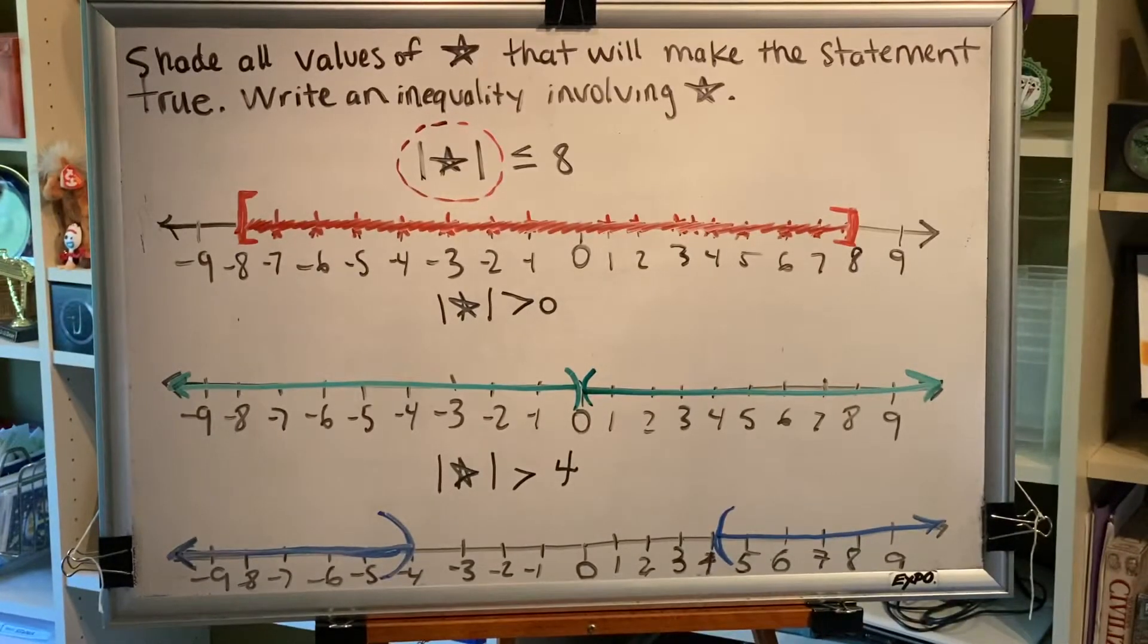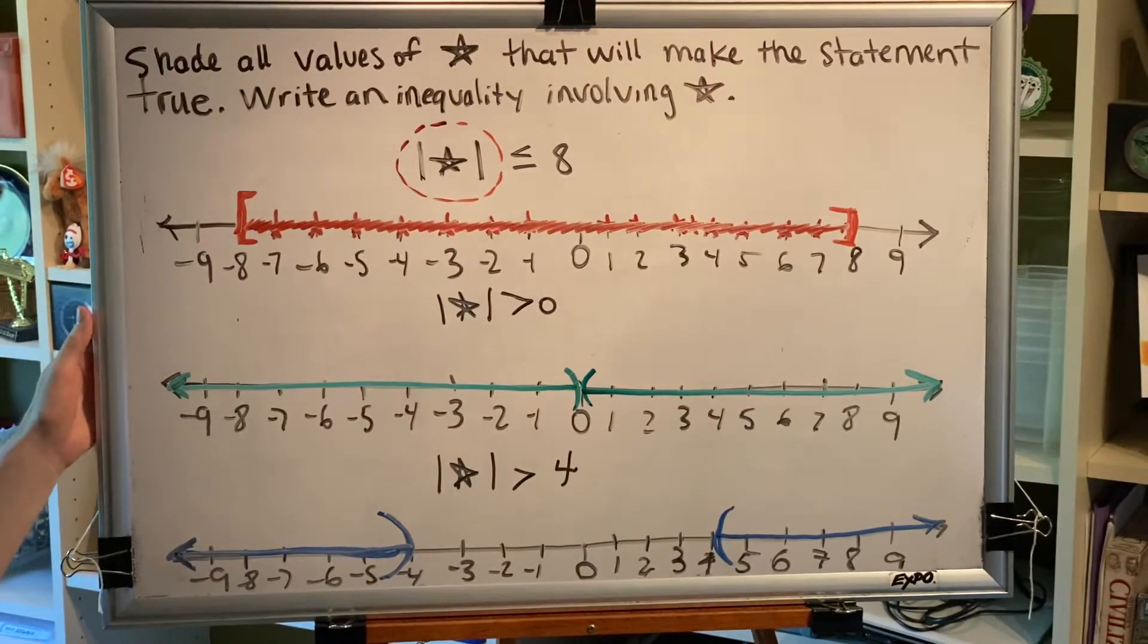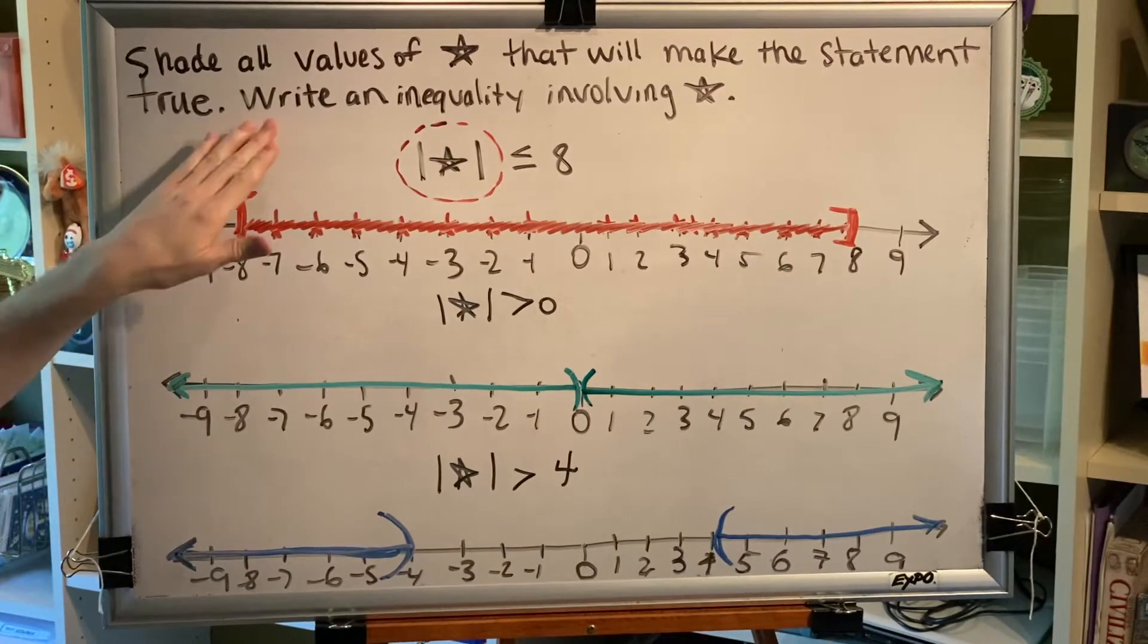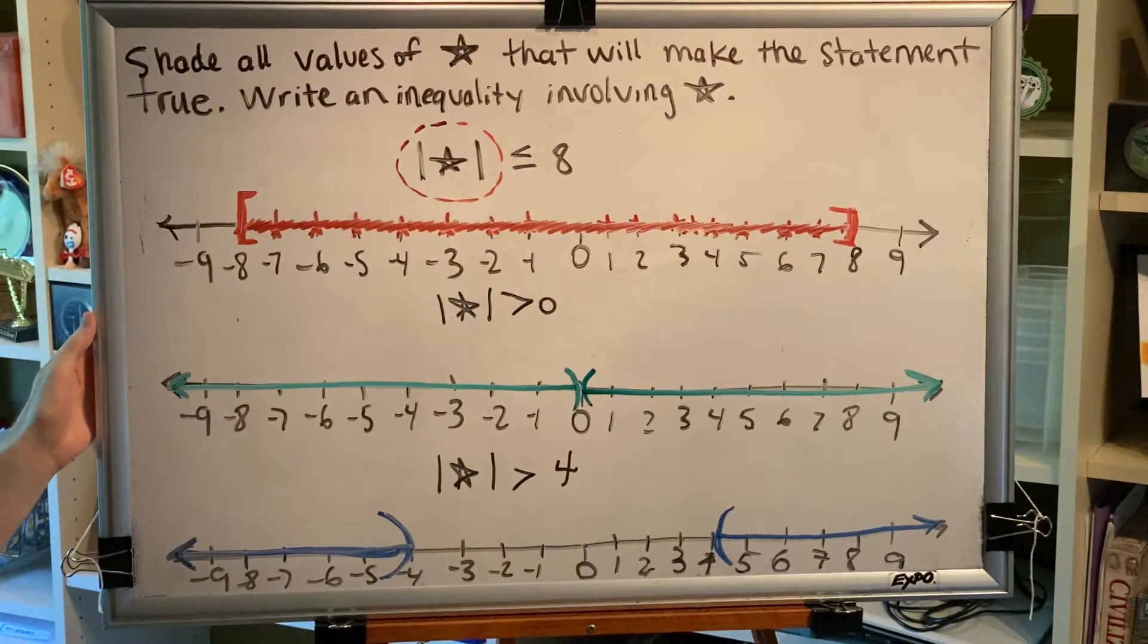The topic of this video is rewriting absolute value inequalities using a number line. We now continue the previous video's problem. For each one of these, we've already done the shading part, now we just have to write the inequality involving star.